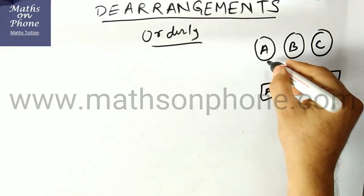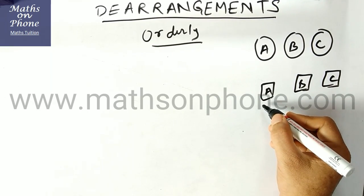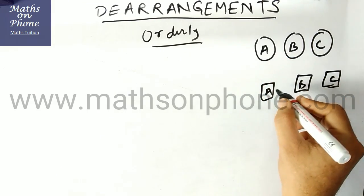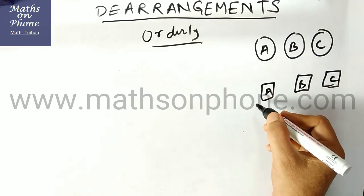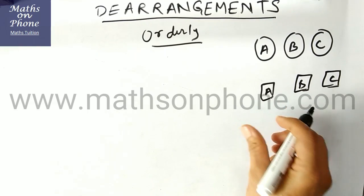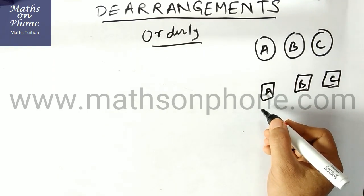If I am putting right letter in the right envelope, that is arrangement. But if we are putting right letter in the wrong envelope, that is derangement. So in how many ways can we put the letters wrongly, that we will be discussing.